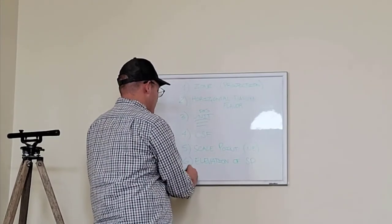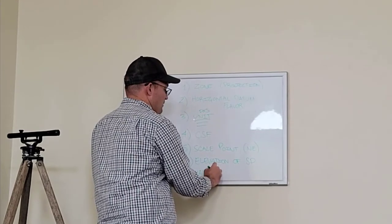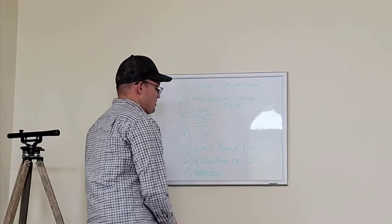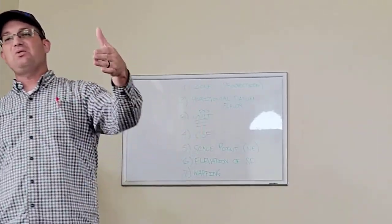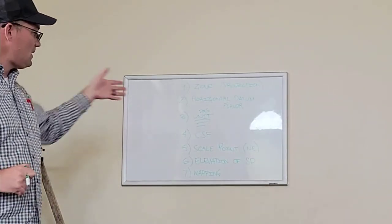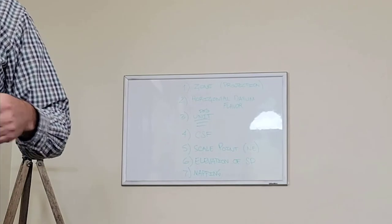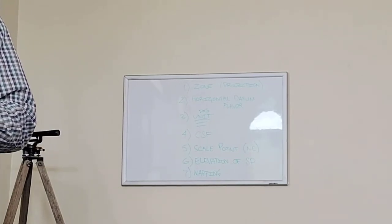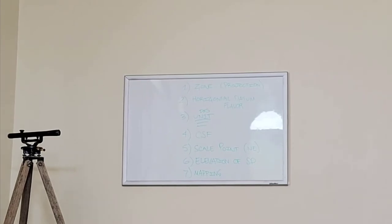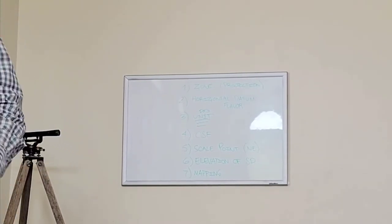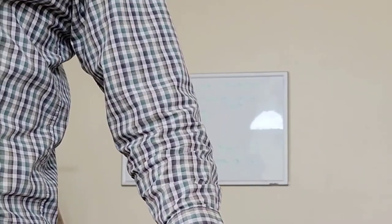The mapping angle tells you how to get from grid north and grid bearings to ground bearings. Those are the seven things: zone, horizontal datum and flavor, distance unit, combined scale factor, scale point coordinates, scale point elevation, and mapping angle. Every time we use state plane coordinates, all seven things must be on the map — or I am violating the California Public Resources Code. Most surveyors don't even give you all of this, but it's the law.